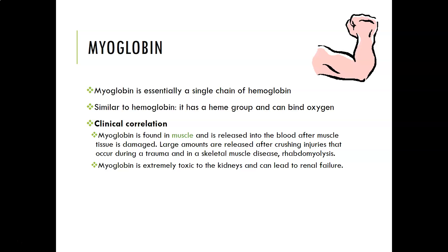Myoglobin being found in muscle is released into the blood after muscle tissue is damaged. Large amounts are released after crushing injuries that occur during trauma — think car wreck or big fall — and in any skeletal muscle diseases, also in rhabdomyolysis, such as Duchenne's muscular dystrophy.